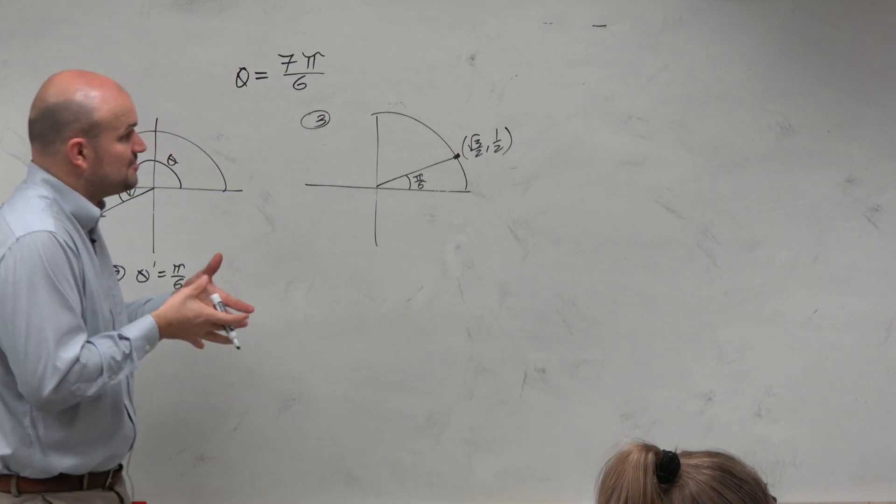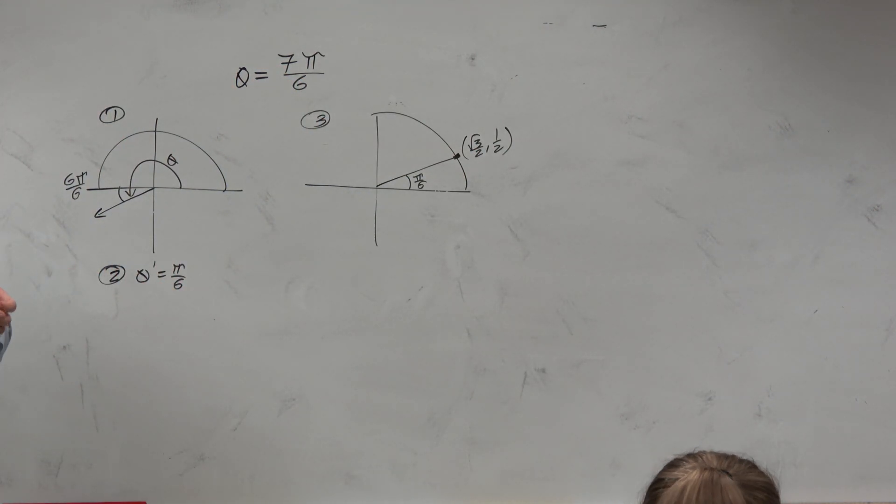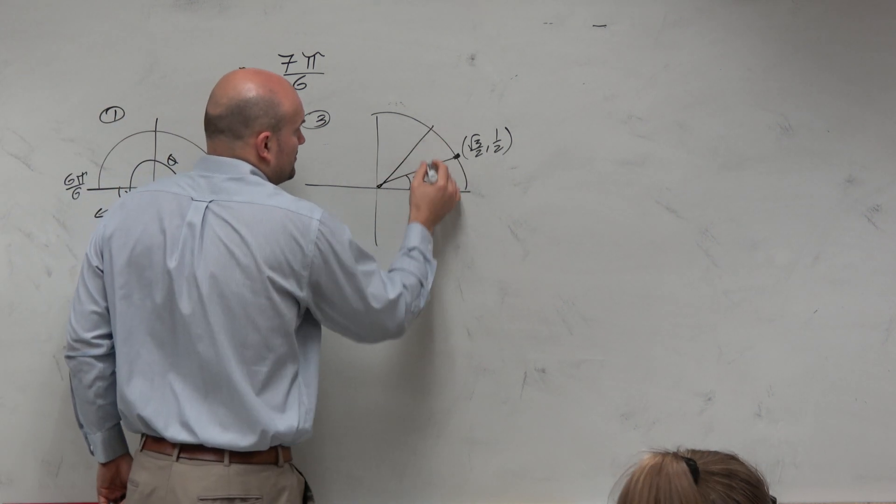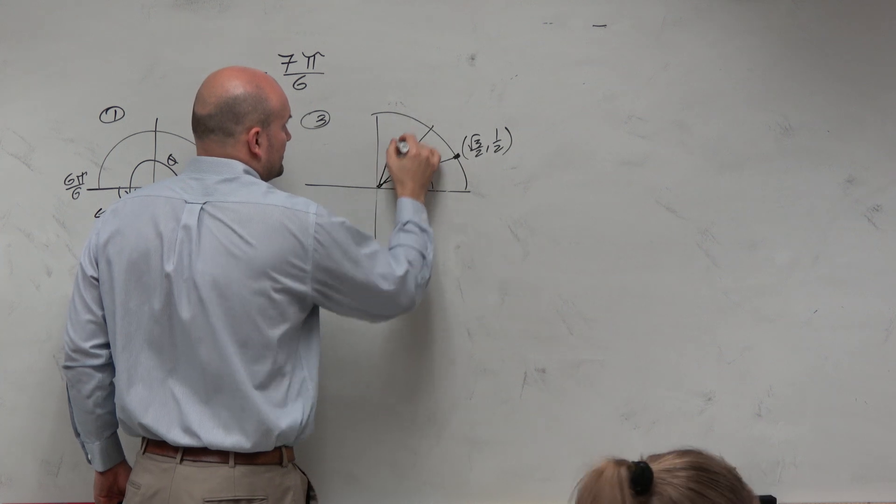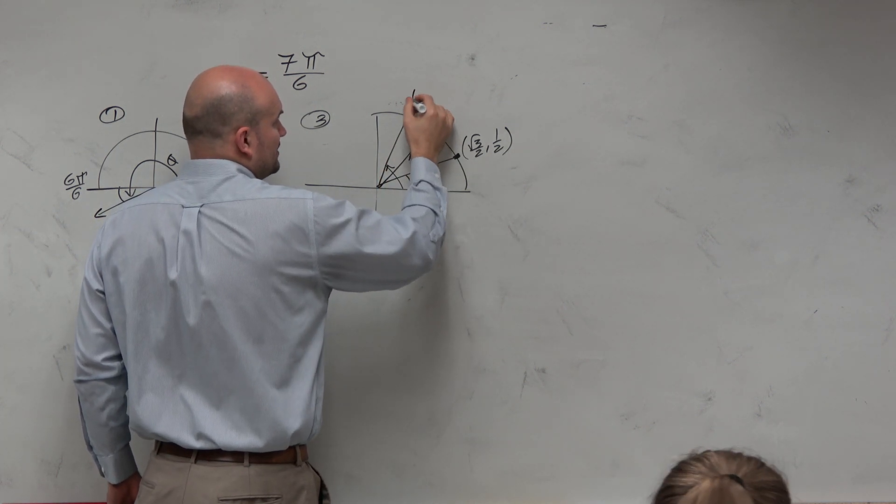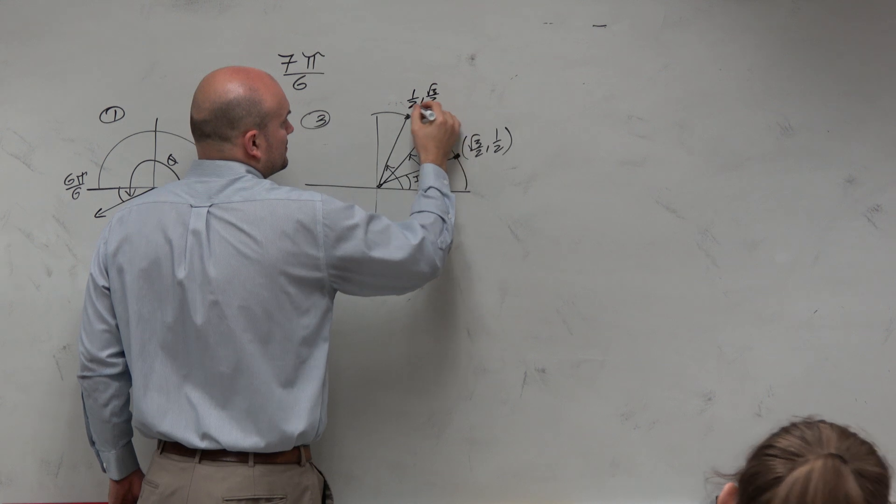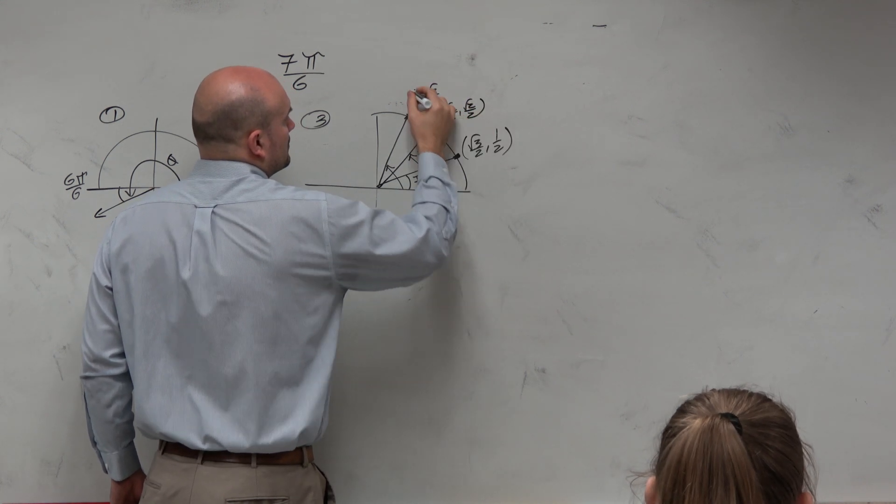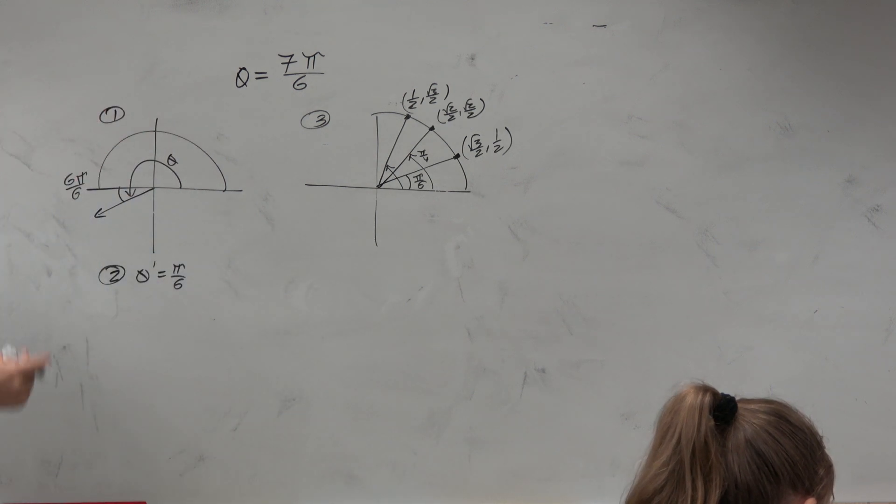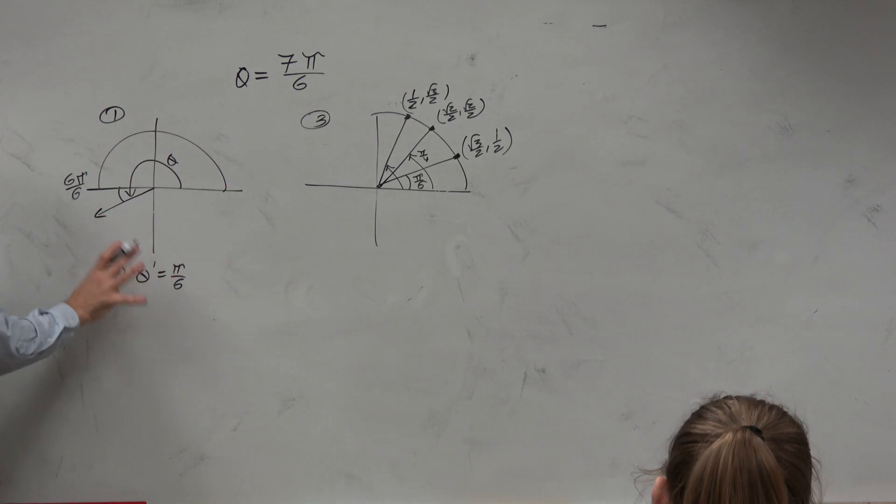And that comes from the special right triangle. So I know that angle. And you're going to need to know all of these: pi over 6, pi over 4, and pi over 3. You'll need to know all of those. There's not really much we can get out of the way from that.